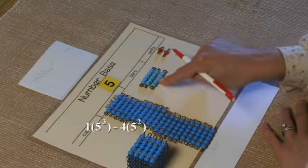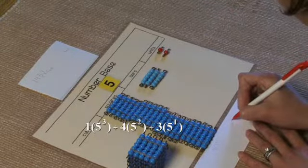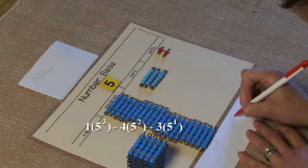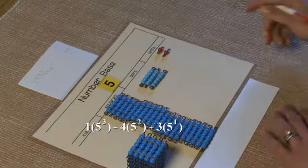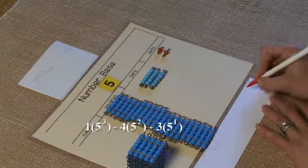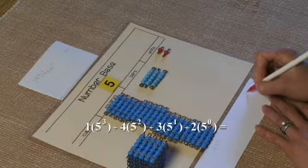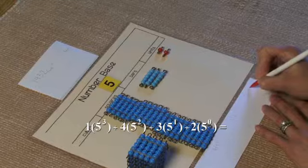Here we have three bars. There are five bars, so we have 3 times 5 to the first power. And in our units, we have two unit beads. We can also write that as 2 times 5 to the zero power.